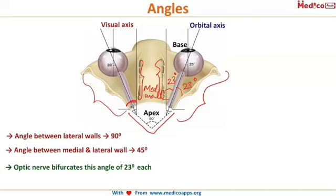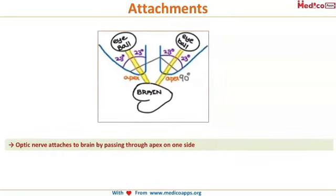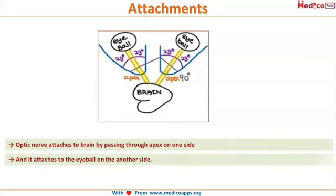The two medial walls are parallel to each other, as is evident from the image. The eyeball is suspended within the orbit with the help of the optic nerve, which attaches to the brain posteriorly and to the eyeball anteriorly. This yellow-colored structure visible here is your optic nerve — posteriorly attached to the brain and anteriorly to the eyeball.